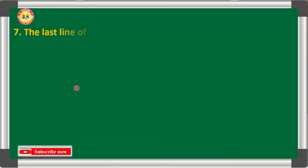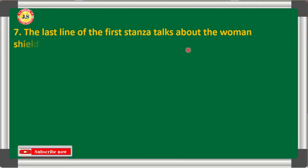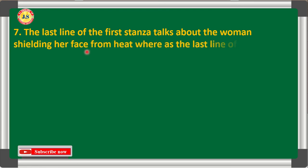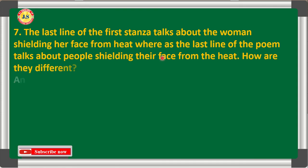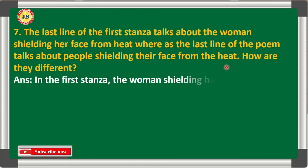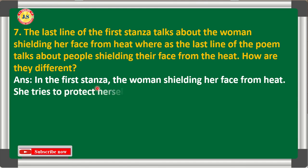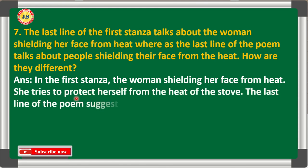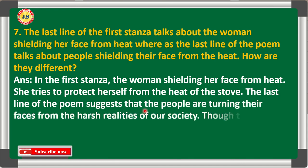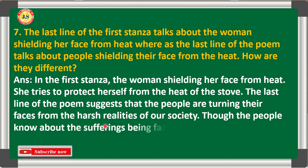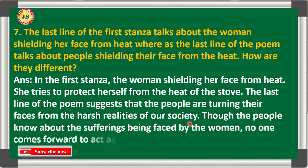Question 7: The last line of the first stanza talks about the woman shielding her face from the heat, whereas the last line of the poem talks about people shielding their faces from the heat. How are they different? In the first stanza, the woman shields her face from the heat of the stove. The last line of the poem suggests that people are turning their faces from the harsh realities of society — though people know about the sufferings faced by the woman, no one comes forward to act against it.